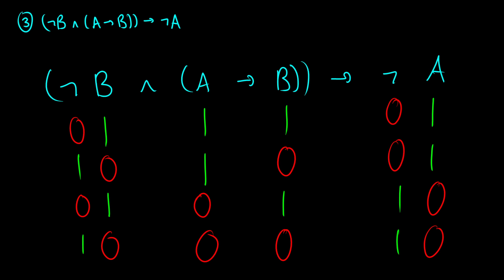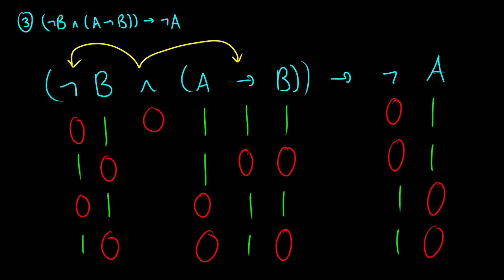Let's do A arrow B. We've done this one already in this video, so that gives us 1, 0, 1, 1 — your standard conditional table. Now we have to do AND, taking information from NOT B and from A arrow B. It is true when both are true. First row: 0, 1 gives 0. Second row: 1, 0 gives 0. Third row: 0, 1 gives 0. Fourth row: 1, 1 gives us 1.